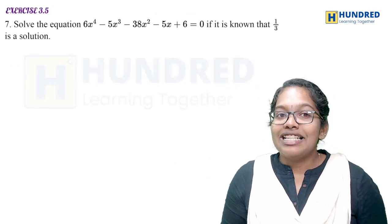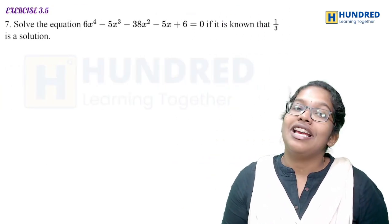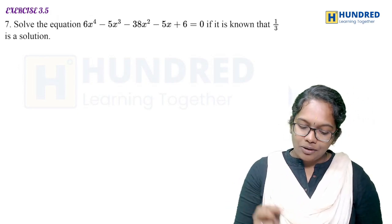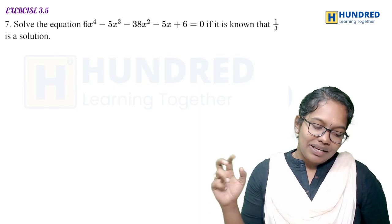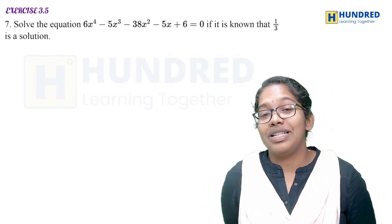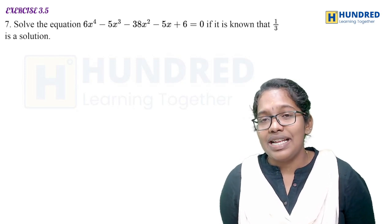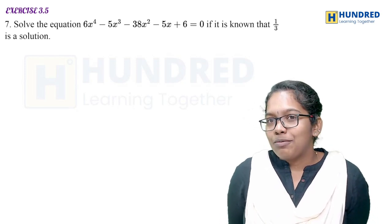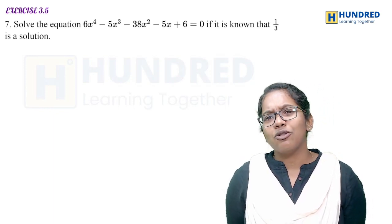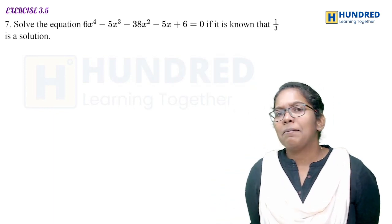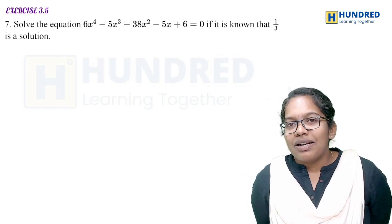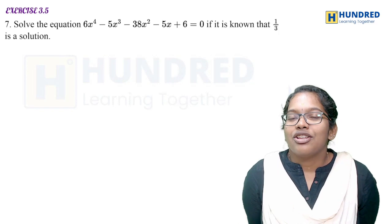Next important question is in Exercise 3.5, the 7th question. In that, you have to solve the equation, and it is known that 1/3 is a solution. So 1/3 is one solution, and this is again a reciprocal equation. So with this, we will just proceed. So 1/3 is the solution, we can find a factor. And if we divide it, we will have a cubic equation.